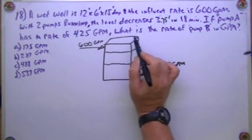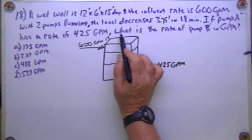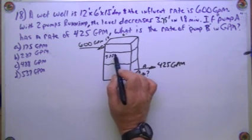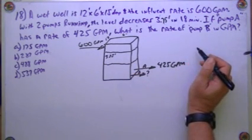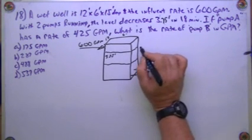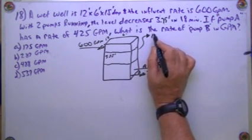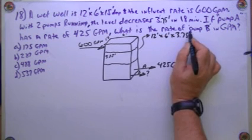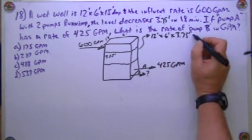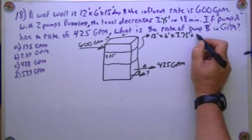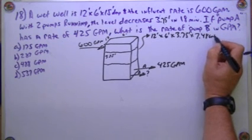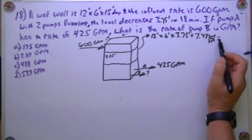So we're 12 feet by 6 feet by 3.75 feet. That's going to give me cubic feet, and I might as well keep going and turn it into gallons per minute, 7.48 gallons per foot cubed. We'll see what that volume in gallons is.